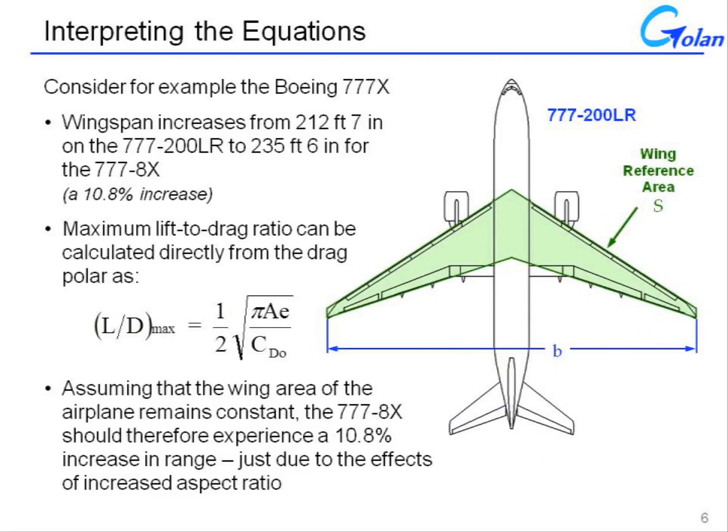Part of the beauty of the foregoing relationships is that they allow us to make some fundamental trades and comparisons without necessarily having to perform all of the detailed analysis of a full performance or mission profile study. For example, currently Boeing is developing a 777X, an extended-range, more fuel-efficient version of the 777, in which they will increase the wingspan of the aircraft, among other things, from 212 feet 7 inches to 235 feet 6 inches. So that's almost an 11% increase in the wingspan.